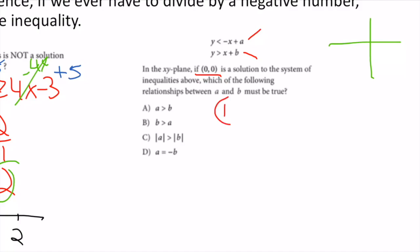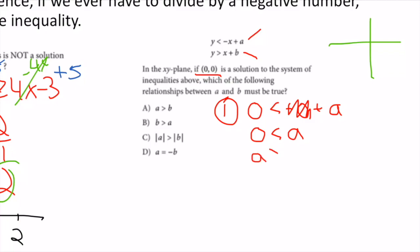I plug (0, 0) into equation 1: 0 < 0 + a, which simplifies to 0 < a. So a > 0, meaning a is a positive number.